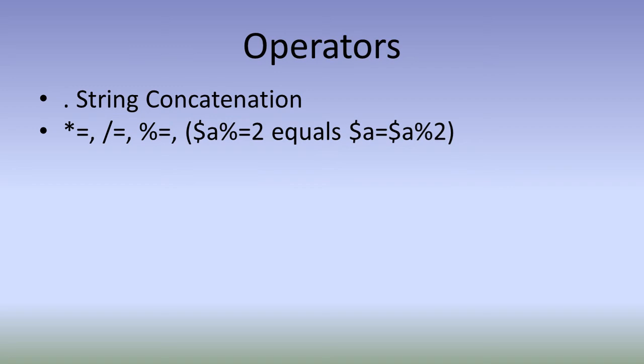Star equal to, slash equal to and percentage equal to. These are arithmetic operator combined with assignment operator. We have plus equal to and minus equal to in many programming languages. In PHP, we also have star equal to, slash equal to and modulus equal to. Dollar a modulus equal to two, that means it will be equal to dollar a equal to dollar a modulus two. That is divided by two, the remainder will be stored in dollar a.